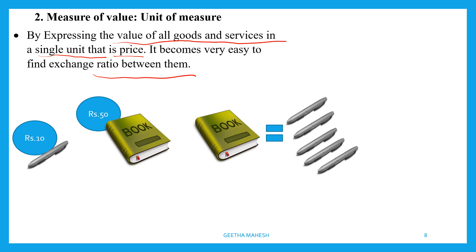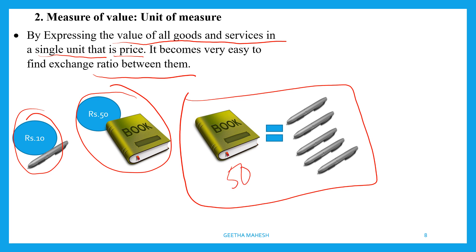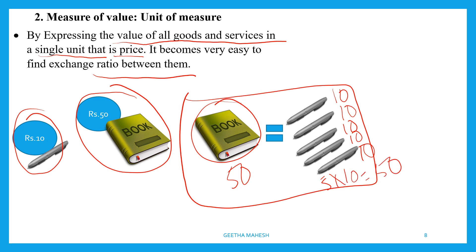Expressing the value of goods and services in a single unit — price — makes it easy to find the exchange ratio between them. For example, if the price of a pen is 10 rupees and the price of a book is 50 rupees, you can find how many pens you need to buy one book. That is 5 pens: 5 × 10 = 50. So when you give 5 pens, their value equals the book's value, and you can determine the exchange ratio between the two.